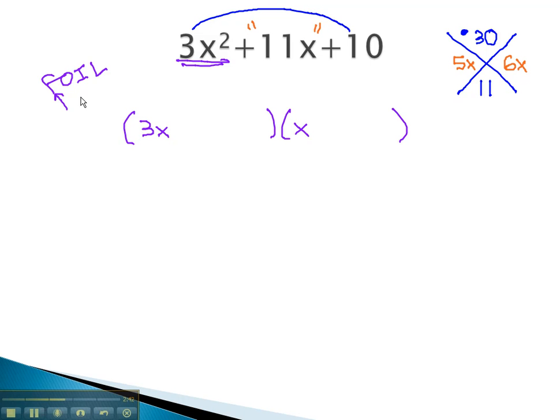To figure out what goes in the last two positions, we consider the outside and inside numbers. In other words, 3x is multiplied by something, and x is multiplied by something. And the answers from those two problems are 5x and 6x.